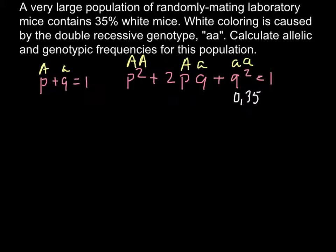If we know that q² = 0.35, we can calculate q by taking the square root of both sides. We get q = √0.35 = 0.59.